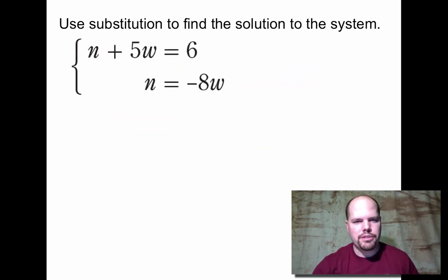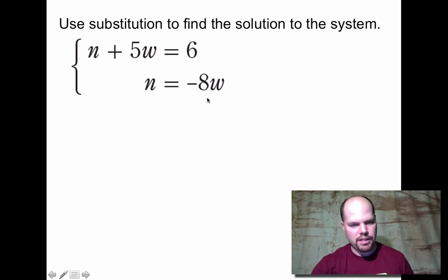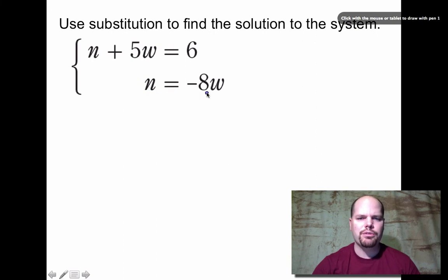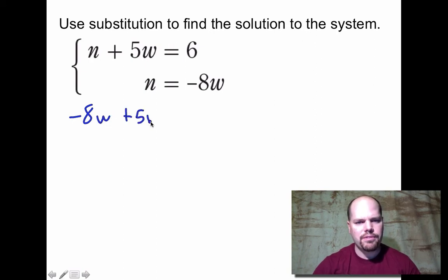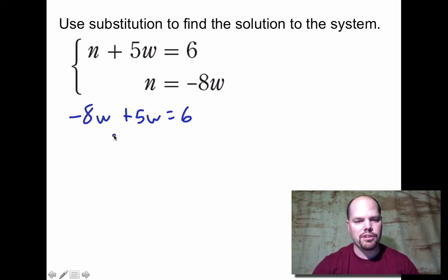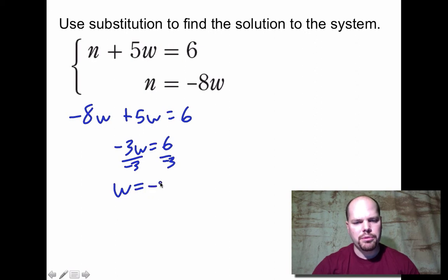Use substitution to find the solution to this system: n + 5w = 6 and n = -8w. One equation has a variable by itself — n = -8w — so we substitute that into the other equation. Replacing n gives -8w + 5w = 6, which simplifies to -3w = 6. Dividing both sides by -3 gives w = -2.